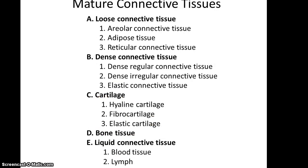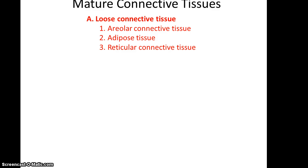There are five big categories within mature connective tissues: loose connective tissues, dense connective tissues, cartilage, bone tissue, and liquid connective tissues. We're going to start off with the loose connective tissues, which include areolar connective tissue, adipose tissue, and reticular connective tissue.